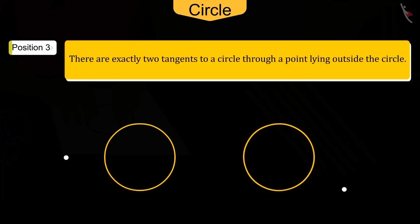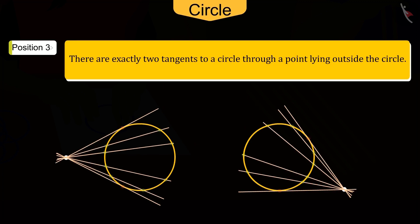Hence, we can say that there are exactly two tangents to a circle through a point lying outside the circle.